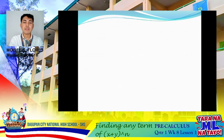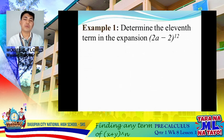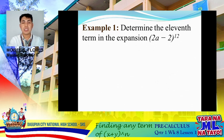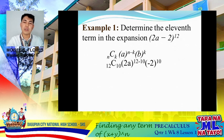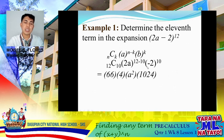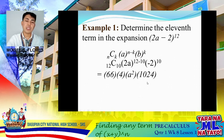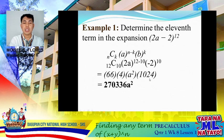Now what if you are asked for the 11th term of the expansion of (2a minus 2) raised to 12? Take note — you are not to expand it, but specifically you are asked for the 11th term. Using the same formula nCk times a raised to (n minus k) times b raised to k: our n is 12, and k is 11 minus 1, which is 10. So 12C10 is 66, and 2 squared is 4, and negative 2 raised to 10 is 1024.